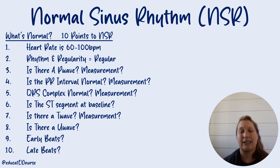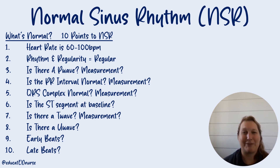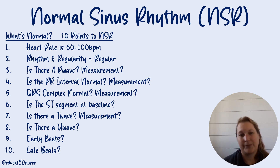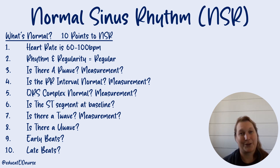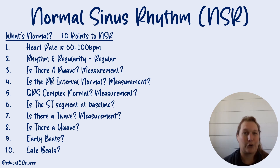Heart rate: a normal heart rate should be between 60 and 100. If it's outside one of those ranges, you automatically know it's not normal. Rhythm and regularity: it should be regular, and we're going to talk about how we figure that out. Is there a P wave? And we're going to look at what that measurement should be. Is there a P wave before every QRS? What is the PR interval? What does the QRS look like — is it normal, what's the measurement? Is the ST segment at baseline? What does that measurement look like — is it elevated or depressed? Is there a U wave? Are there any early beats? Are there any late beats?